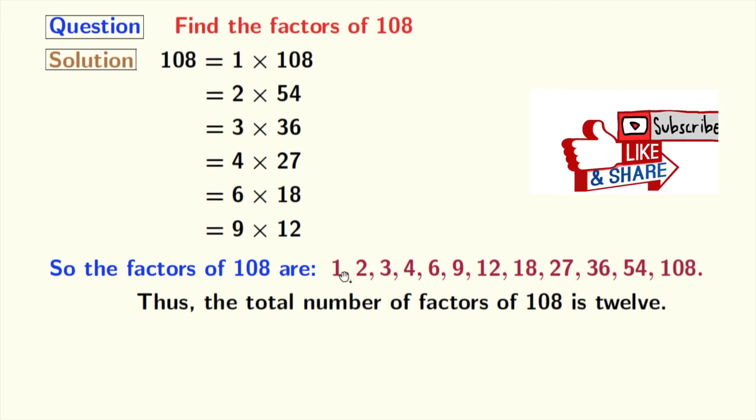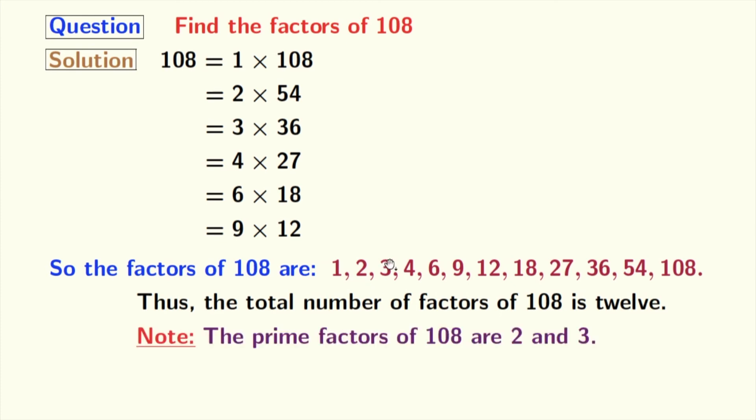Now, if we look at these factors, we can see that 2 and 3 among these numbers are prime numbers because these two numbers do not have any divisor other than 1 and that number itself. So, we can see that the prime factors of 108 are 2 and 3.